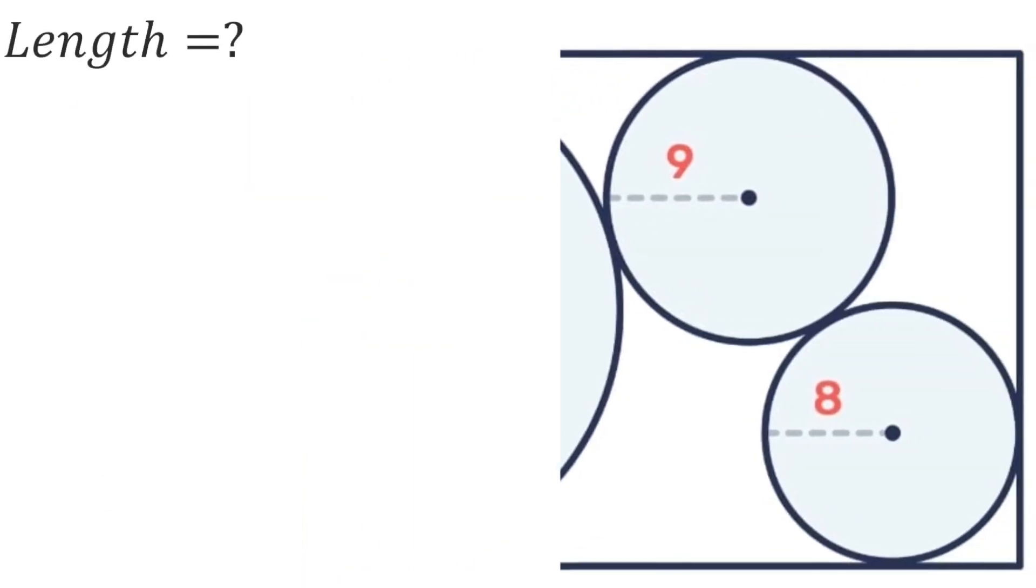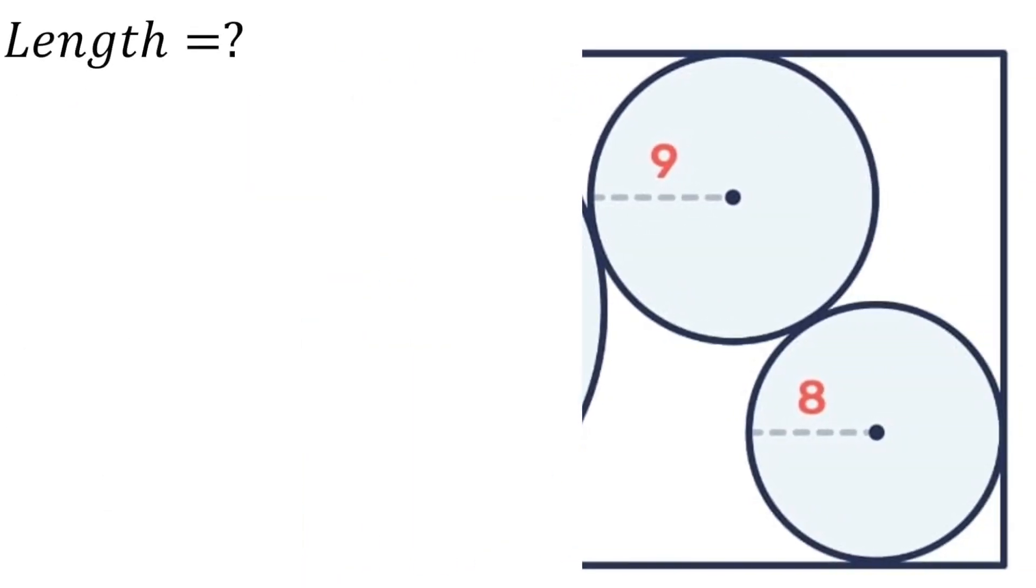Next we're going to focus on the smallest circle and the medium circle. Similarly, we're going to make constructions as follows. That side there will be 32 minus the 9 at the top and the 8 at the bottom, which leaves us with 15.